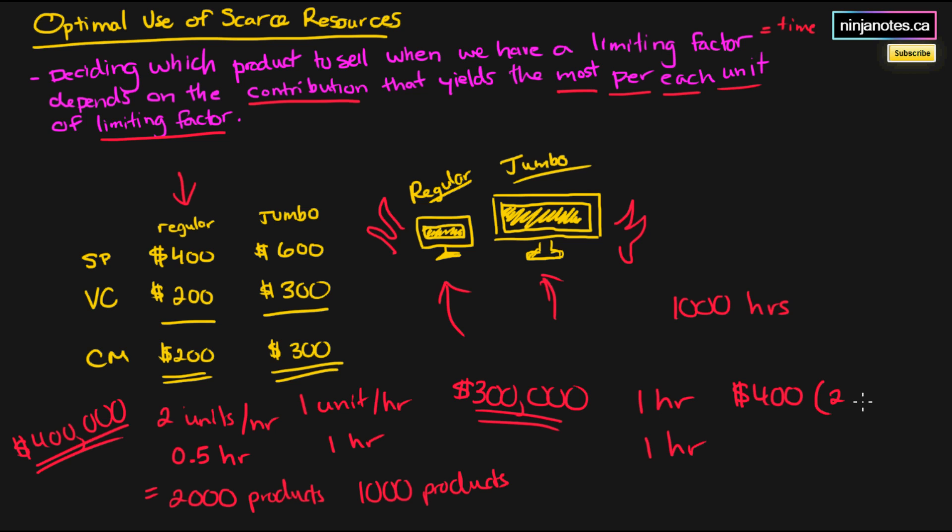That's 2 units times the contribution margin. While for 1 hour of the jumbo line, it would be $300, which is 1 unit times the contribution margin. You always go with the one that yields the greatest amount of contribution margin based on the limiting factor.